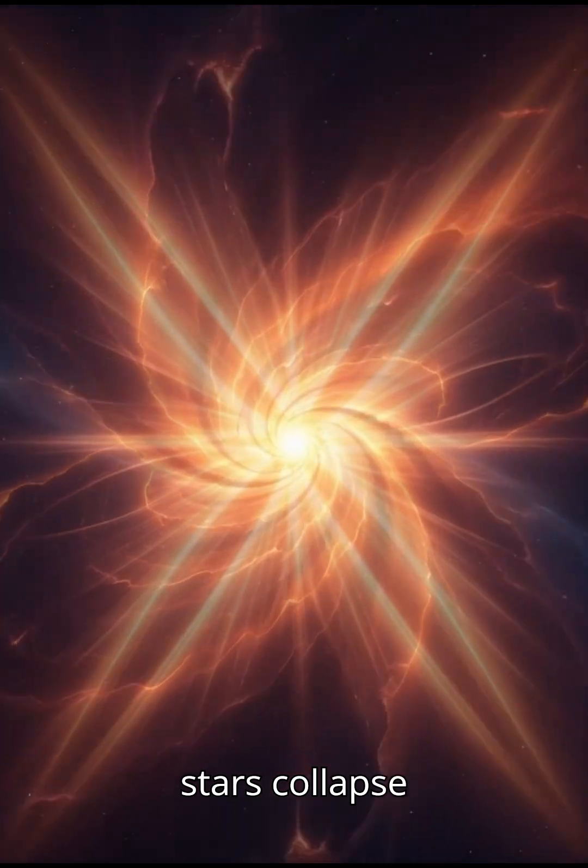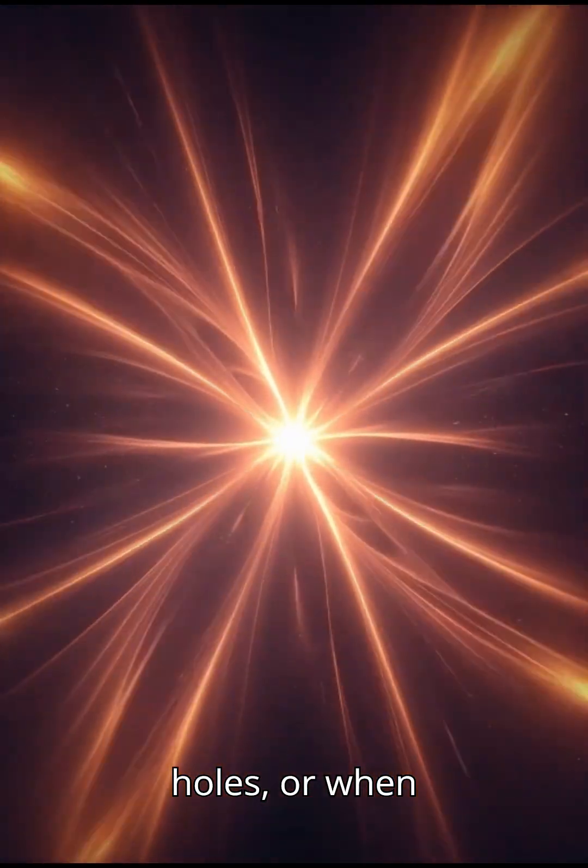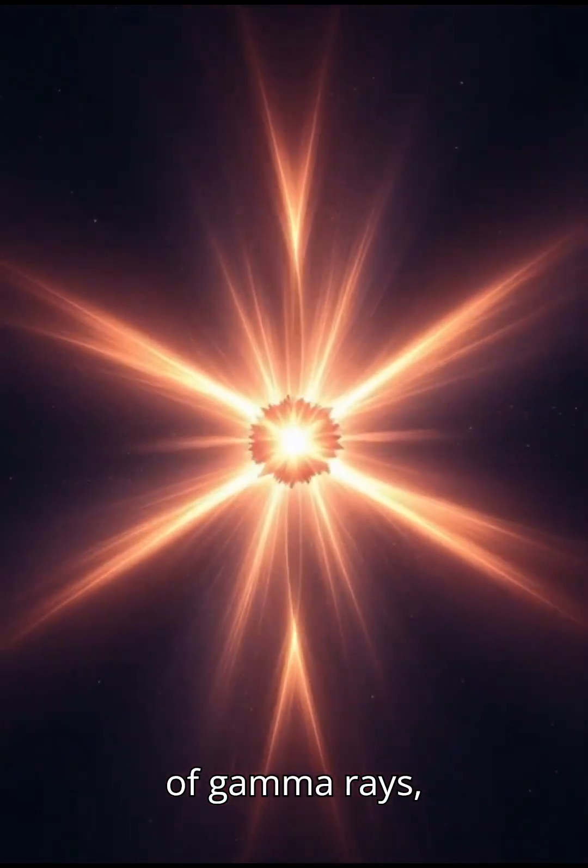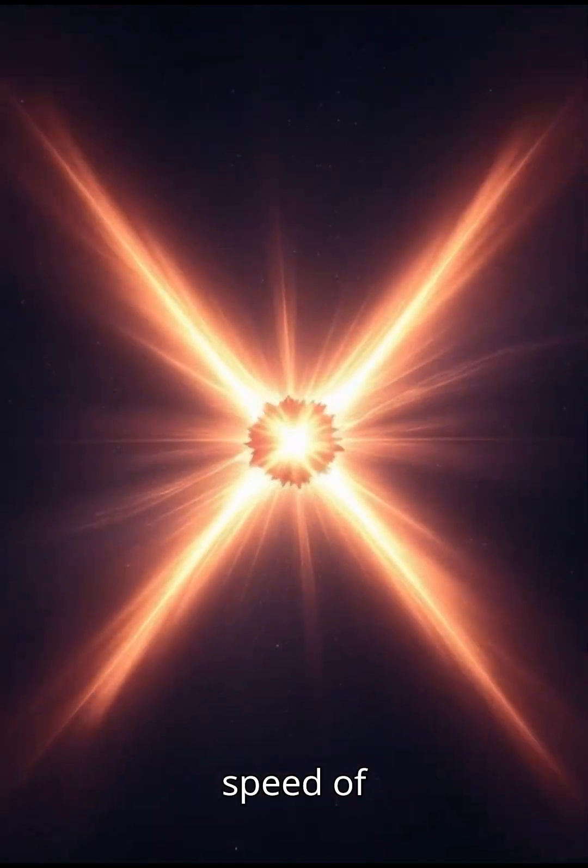GRBs happen when massive stars collapse into black holes, or when neutron stars collide. The result? A jet of gamma rays blasting through space at nearly the speed of light.